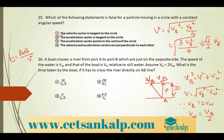The time T = distance/velocity = D / [(√3/2)·VB] = 2D / (√3·VB). So the answer is option A: 2D divided by (√3·VB).